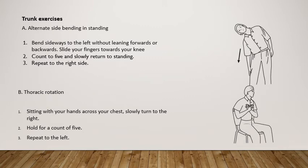Trunk exercises follow. First is alternate side bending in standing: bend sideways to the left without leaning forwards or backwards, slide fingers towards your knees, count to five, and slowly return to standing, then repeat to the right side. Next is thoracic rotation: sitting with hands across your chest, slowly turn to the right, hold for a count of five, then repeat to the left.